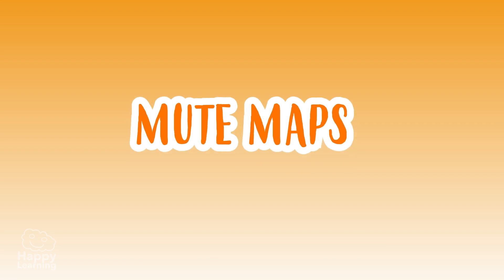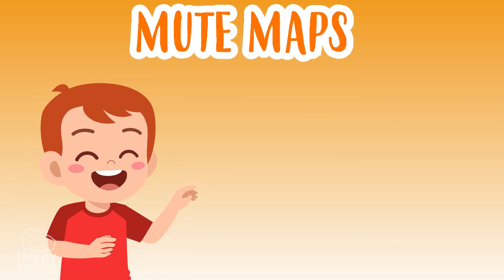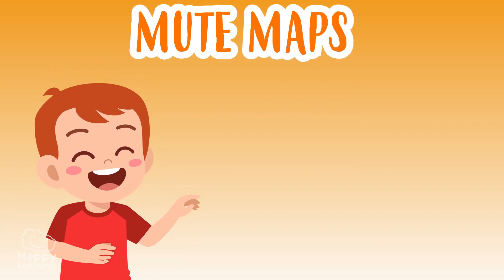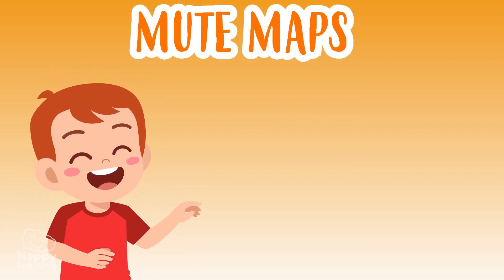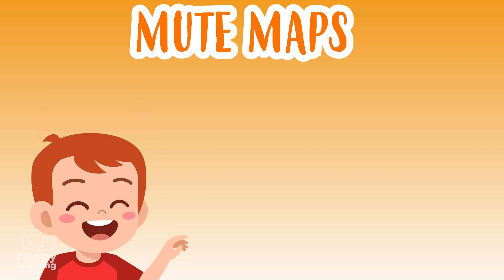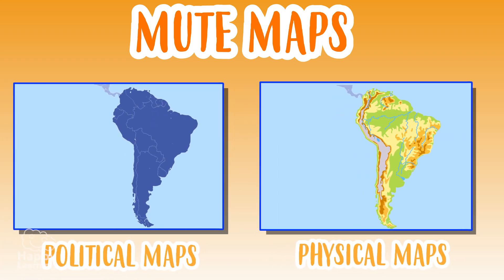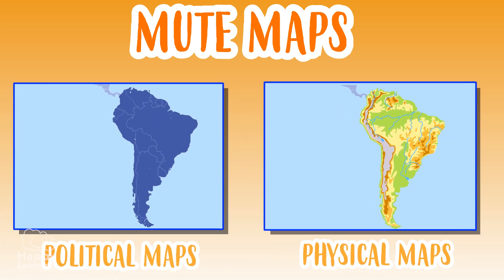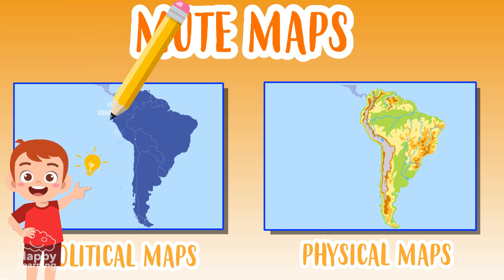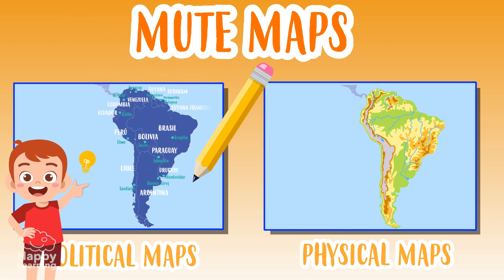The mute maps are missing! As they are so quiet, I had forgotten about them. The mute maps are political or physical maps in which none of the names of anything appear, so you can write everything you've learnt on them.